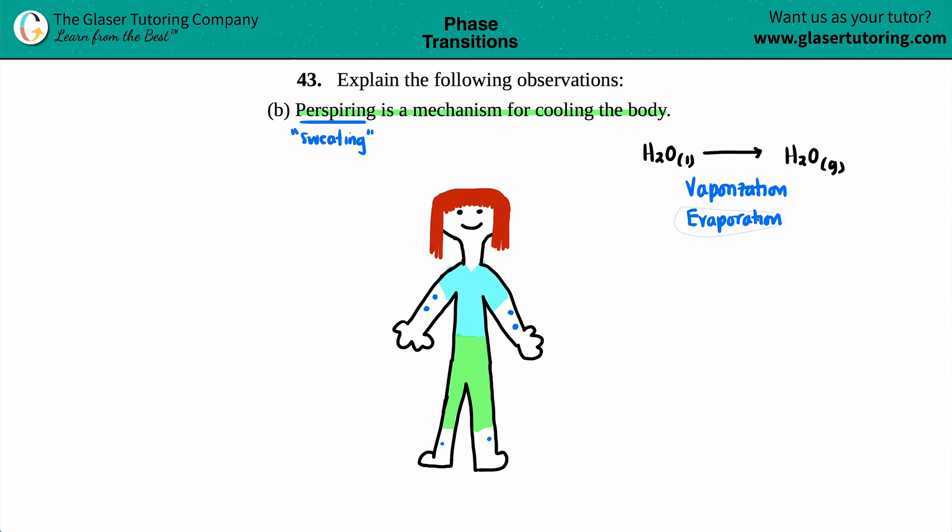Now when this happens, just know that vaporization or evaporation, this is an endothermic reaction. And remember, all endothermic reactions always absorb heat. So they take the heat with them and they go somewhere else. Remember, heat cannot be created nor destroyed, just transferred.